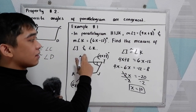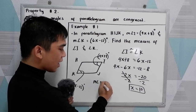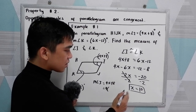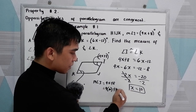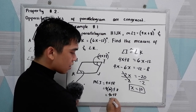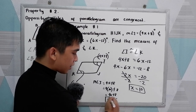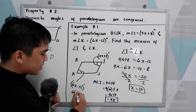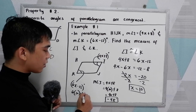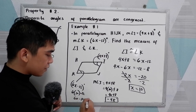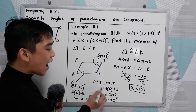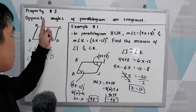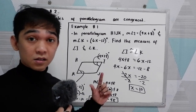Find the measure of angle I and angle K. Measure of angle I equals 4x plus 8. Substituting x equals 10: 4 times 10 is 40, plus 8 gives 48 degrees for angle I. For angle K: 6 times 10 is 60, minus 12 equals 48 degrees. Angle I equals 48 degrees and angle K equals 48 degrees. That proves our property number 2 — opposite angles are congruent.